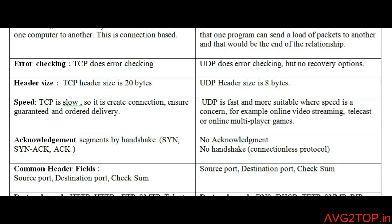Error checking: TCP does error checking, which is why it is reliable and has a strong connection. But UDP does not check for errors, so it does not retransmit or give a request back to the source, and there is no recovery option — no retransmission is possible.